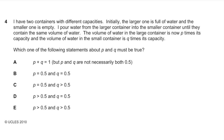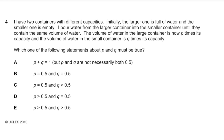Question 4: I have two containers with different capacities. The larger one is full of water; the smaller one is empty. I pour water until both contain the same volume. The volume in the larger container is now p times its capacity, and in the smaller container is q times its capacity. Since the volumes are equal, the larger lost exactly half its water, so p = 0.5. The same volume went into the smaller container, so q is greater than 0.5. The answer is C.